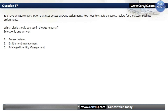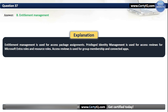Question 37. You have an Azure subscription that uses Access Package Assignments. You need to create an Access Review for the Access Package Assignments. Which blade should you use in the Azure portal? Our options are: A. Access Reviews; B. Entitlement Management; or C. Privileged Identity Management. The correct option is B, Entitlement Management. Entitlement Management is used for Access Package Assignments. Privileged Identity Management is used for Access Reviews for Microsoft Entra Roles and Resource Roles. Access Reviews is used for Group Membership and Connected Apps.